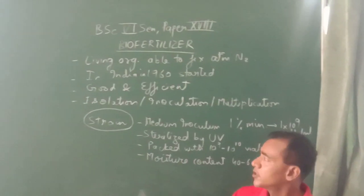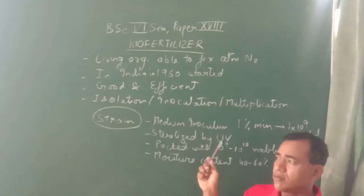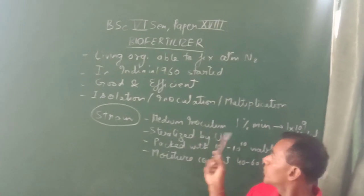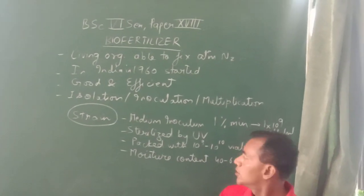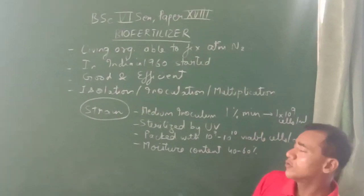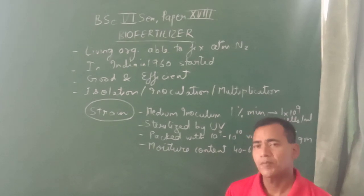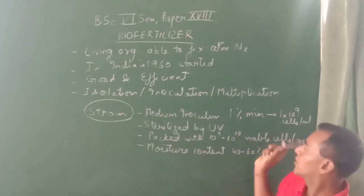The strains that are being used have the inocular medium 1% minimum capped so that it may give rise to 1 × 10^9 cells per milliliter.